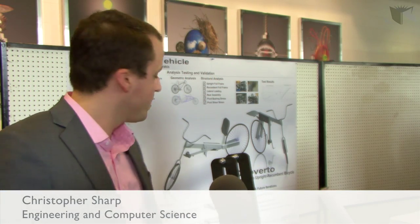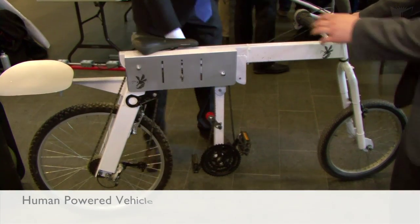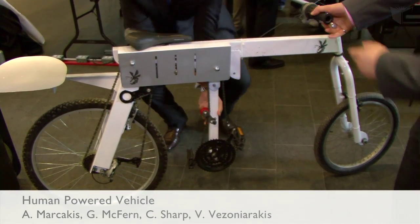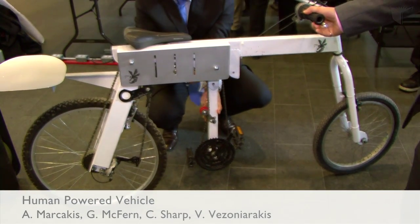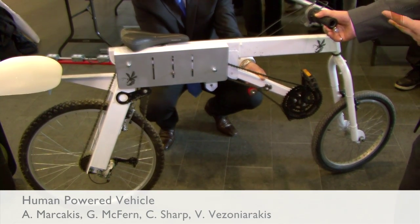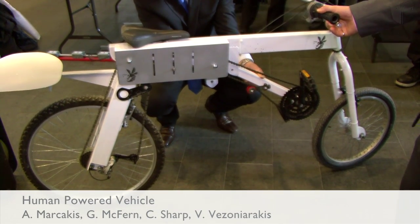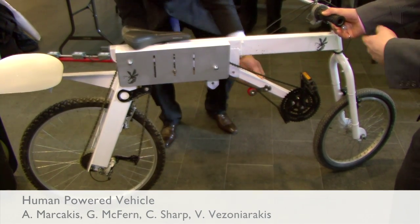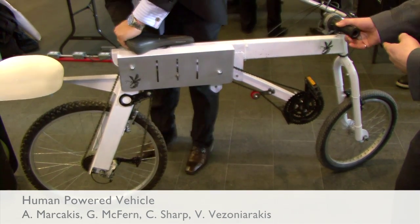This is my team's project, the Dura Verto, and essentially what this is is a transforming bike. What we did here is we really tried to focus on getting the geometry right. What the bike does is it can be switched from a recumbent bicycle to an upright bicycle.